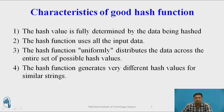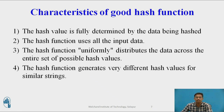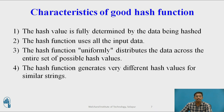The last characteristic is that a hash function generates a different hash value for similar strings. Though strings are similar in nature, the hash function should generate different hash values for similar strings. But it should generate the same hash value for the same string — even a small change inside a string should produce a different hash value, while two identical strings should always produce the same hash value.